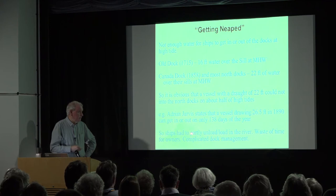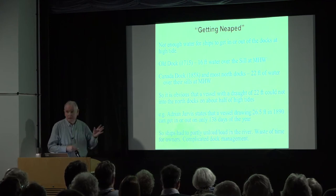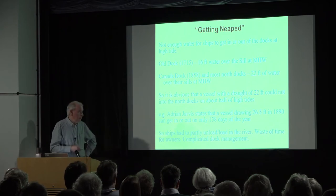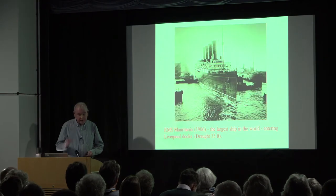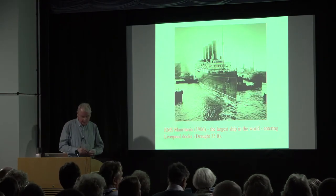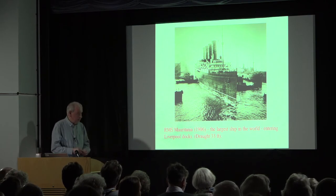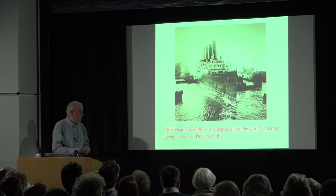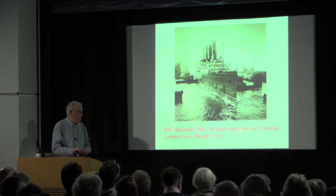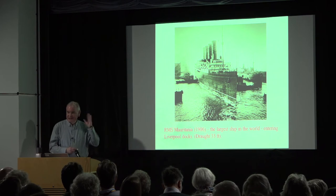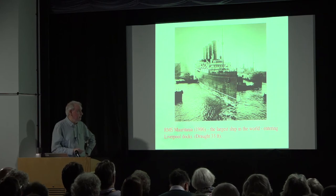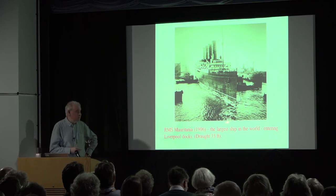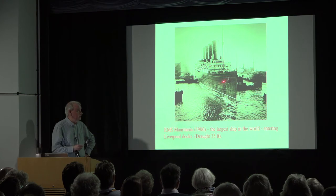What did they do? Ships had to partly unload and load in the river, which was a complete waste of time, and it made dock management very complicated. It could be done though — if you had a very big high spring tide, you could get even the bigger ships in. This is the first Mauritania, the 1906 one — at the time, the largest ship in the world. This is her getting into Sandon Dock. The draft of the Mauritania was 33 feet, but it could be done on the highest spring tide.